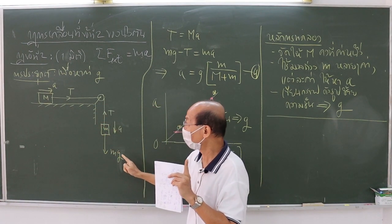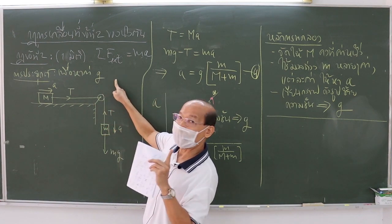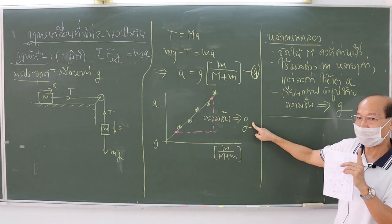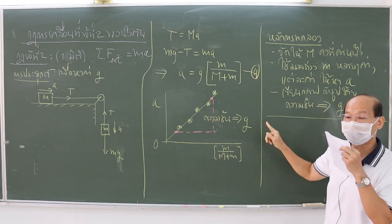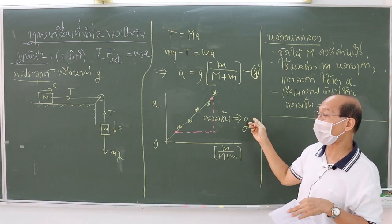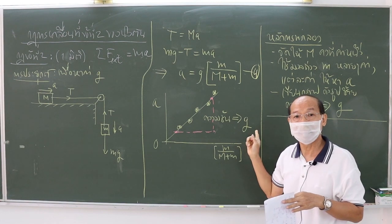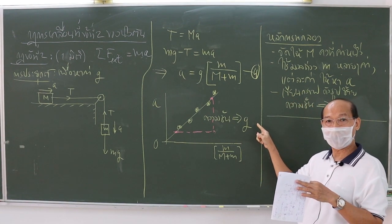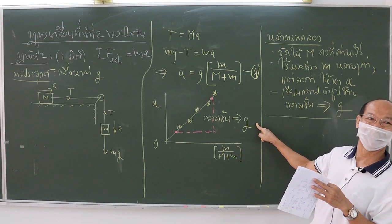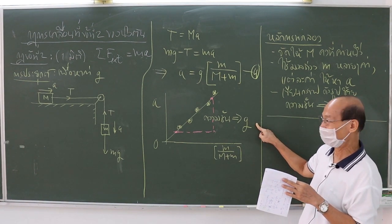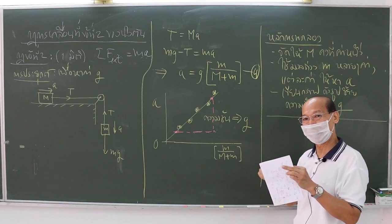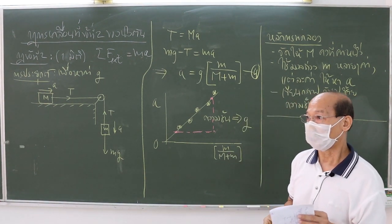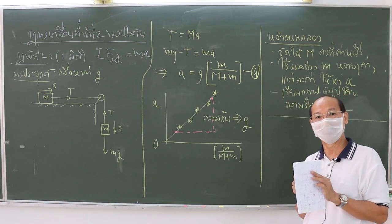You may compare the obtained value of G with the standard accepted G value. The difference in value should not be very large. You can calculate the percentage difference of your values from the standard value. If the percentage difference is small, then you may conclude that Newton's Second Law of Motion is true.